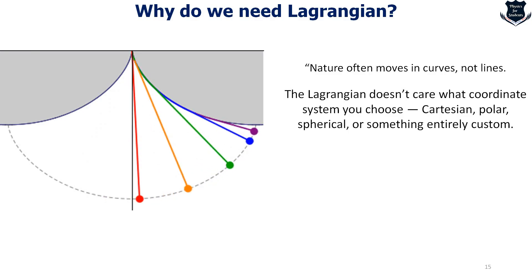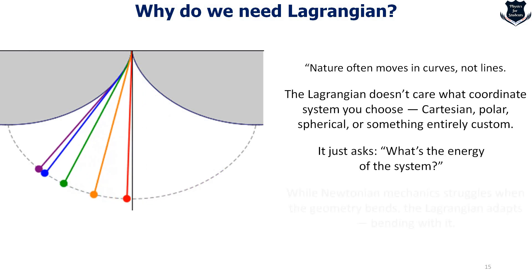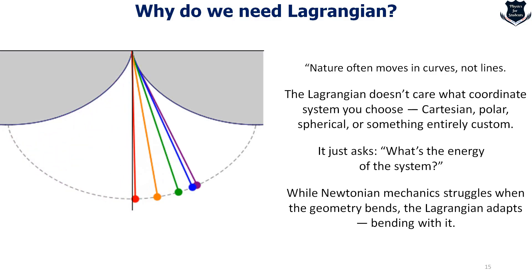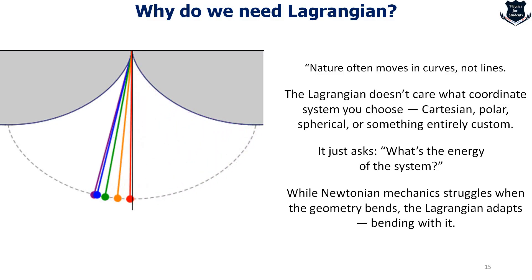Cartesian, polar, spherical - doesn't matter. It can deal with all. What you ask is just what is the energy of the system? You plug in the mathematics and you get the answer. Newtonian mechanics in this case, there's a limitation. I won't say fail, that would be a wrong word. It's the limitation. Lagrangian adapts all those things in a much better way.